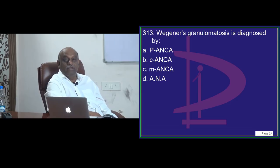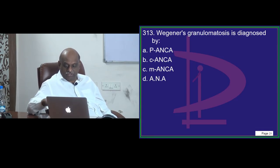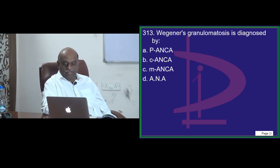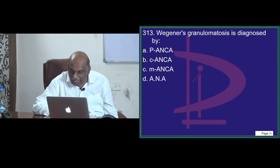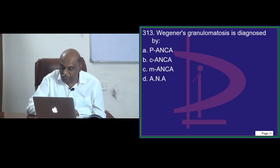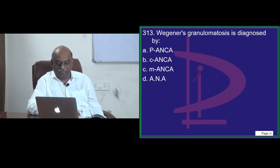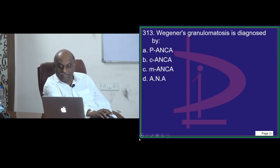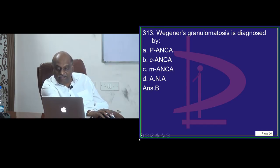Wegener's granulomatosis — what is the serological marker classically seen in Wegener's granulomatosis? Question 313. Very happy to see 149 online students. I can see Surya Prabhat thinking it is c-ANCA, but you can't make mistakes in this kind of question.